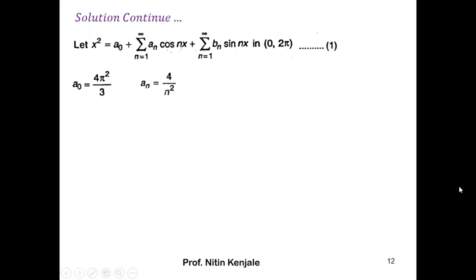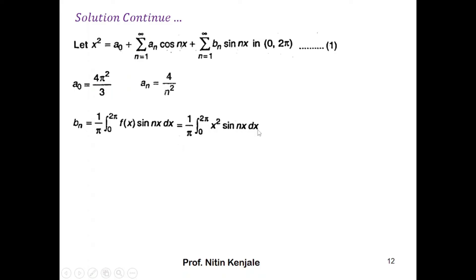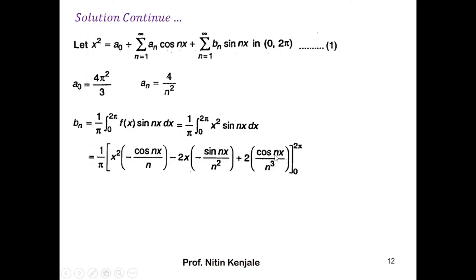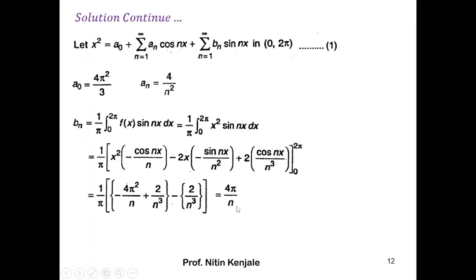Now we find bₙ. The expression for bₙ is (1/π) × integral from 0 to 2π of f(x) sin(nx) dx. Substituting f(x) = x², we get bₙ = (1/π) × integral of x² sin(nx) dx from 0 to 2π. Using Leibnitz rule to evaluate the integral and substituting the limits, we get bₙ = −4π/n.